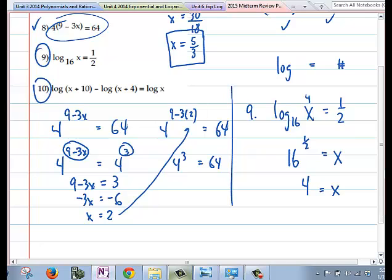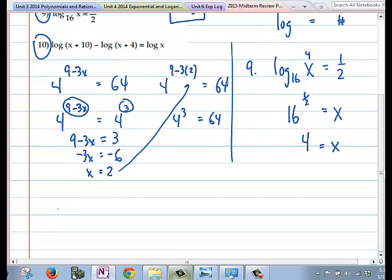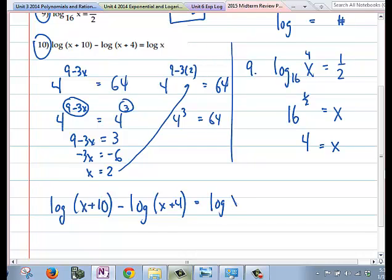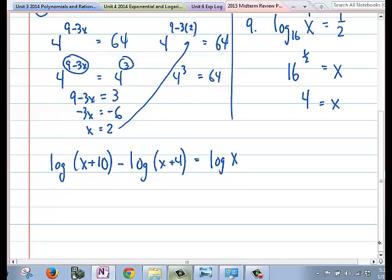On the last one, number 10, I'm just going to rewrite it down here so we can see it. We have a log, common log, because there's no base number, minus another common log equals another common log. So, whenever you have a log subtracted or added to logs on one side, you have to compress the logarithms. Remember, when we subtract logarithms, that's really the logarithm of a quotient of the two terms that were in both logs.